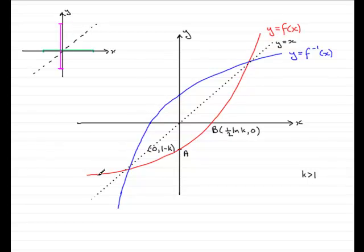So, when it comes to this graph here, we've already established in an earlier part of the question that the bottom of this graph was tending towards the line y equals minus k.